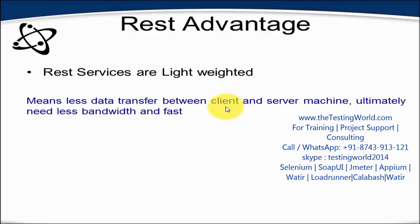The reason REST services are lightweight is that in the case of REST we can transfer data between the client and the server using different formats, like JSON format or TXT format — many formats are supported. But in the case of SOAP, we can transfer data only using XML, which is heavyweight because each data is transferred between two tags: a starting tag and an end tag. It sends data as well as tags, which takes more bandwidth and ultimately it will be slower in execution.